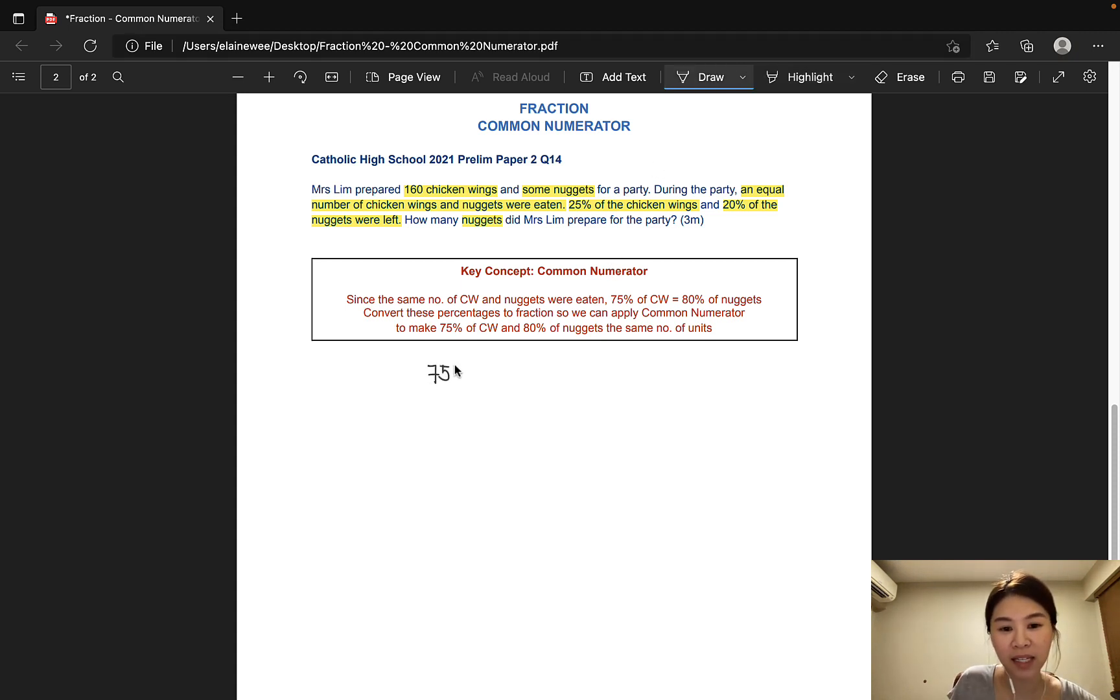75% is 3 quarter in its simplest form, and 80% is 4 fifth in its simplest form. That would mean that 3 quarter of the chicken wings is actually the same as 4 fifth of the nuggets.